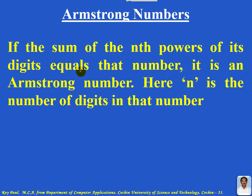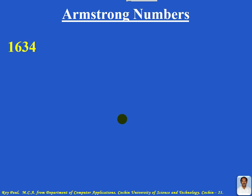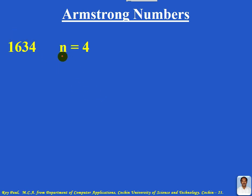Let me explain this by making use of an example. Consider the number 1634. How many digits are there? We know that 4 digits are there: 1, 2, 3, 4. So the number of digits n is equal to 4.